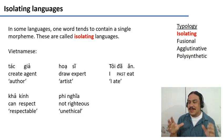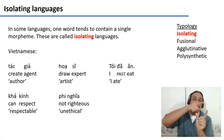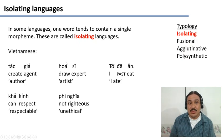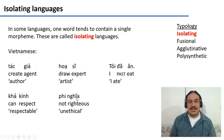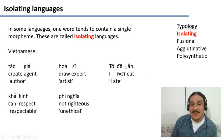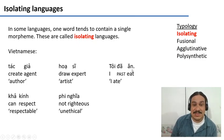We can also describe a language by how it clusters its morphemes. In isolating languages, one word tends to have one morpheme. Vietnamese is like that. A word like 'họa sĩ' means artist: 'họa' means draw and 'sĩ' means expert — two separate words. In English, 'artist' is two morphemes in a single word. Likewise, 'phi nghĩa' means not righteous with one word per morpheme, while in English we have three morphemes: 'un-,' 'ethic,' '-al.' In Vietnamese, even verbal conjugations are their own words — 'tôi đã ăn' (I ate), where the past tense 'đã' is its own little word, not an alteration of the verb to eat as in English 'eats' or 'ate.'